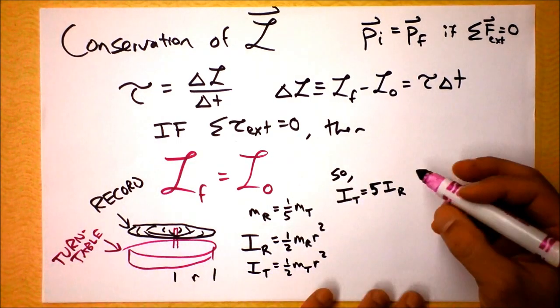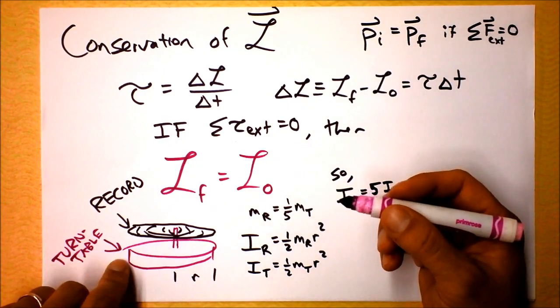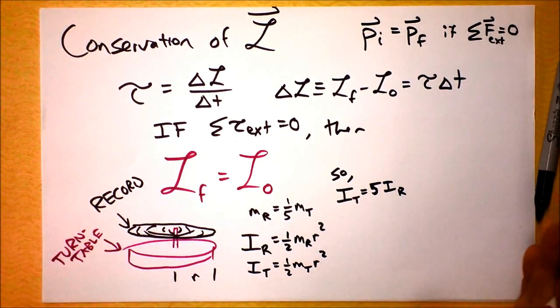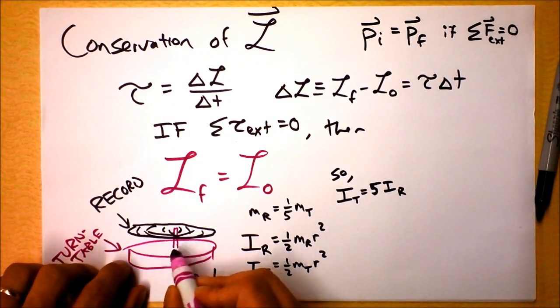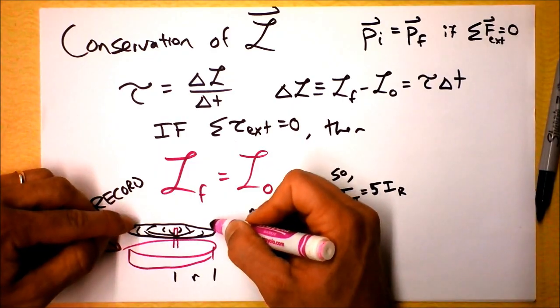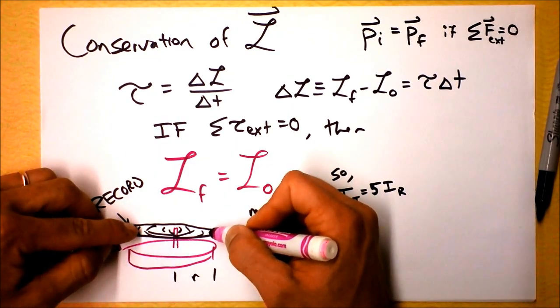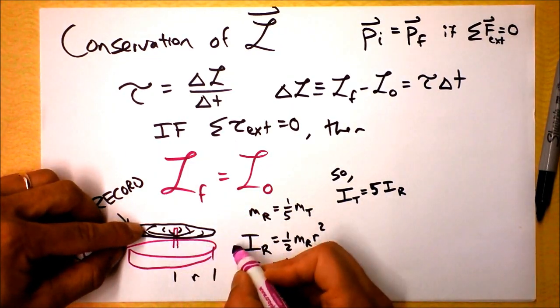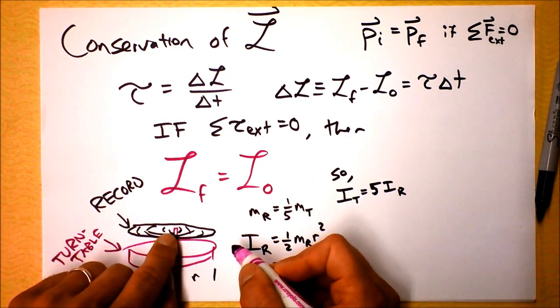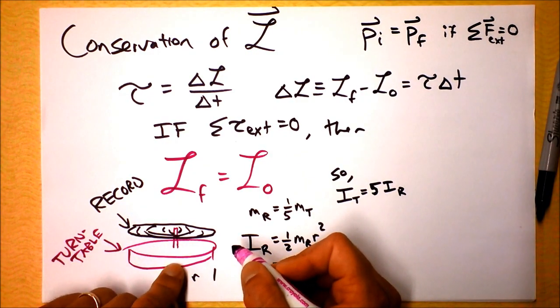So the question that I might ask about this problem is, if the turntable is initially spinning, now this is how, what are those things called? Jukeboxes. This is how jukebox turntables work. You've got a turntable that's spinning, and the record, there may even be a stack of records up here, is at rest. And then the needle comes off the previous record, and this record is, by some complicated mechanism, dropped right onto the platter.